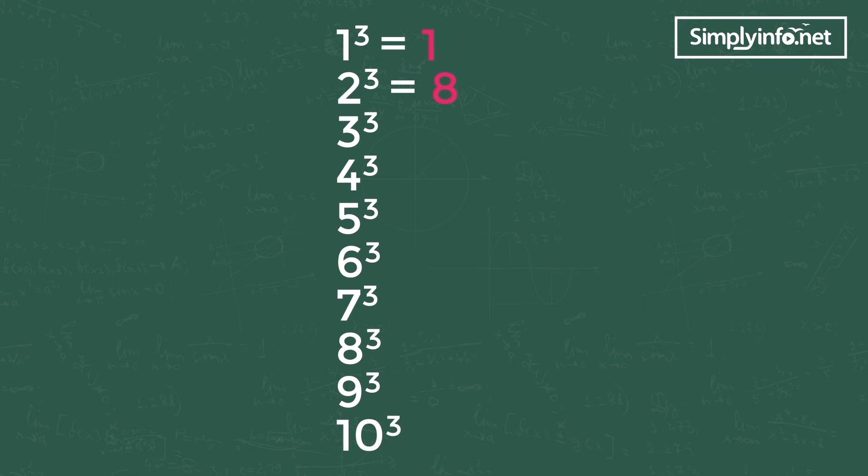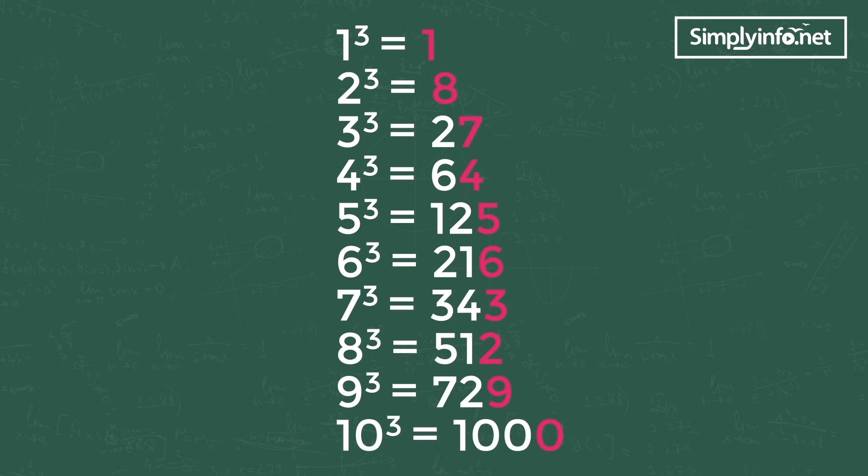3 cube is equal to 27, 4 cube is 64, 5 cube is 125, 6 cube is 216, 7 cube is 343, 8 cube is 512, 9 cube is 729, 10 cube is 1000. Let's see how this is helpful in solving the cube root problems.